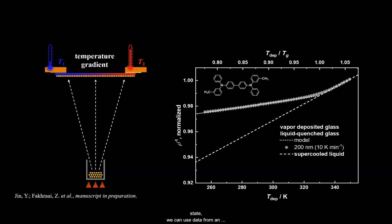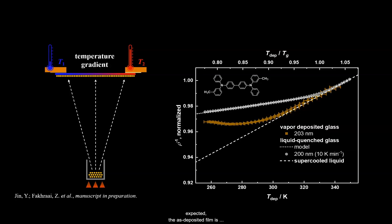Because this is a well-defined state, we can use data from an accurate model to replace the actual experimental data. We shall first look at the case of a thick film of slightly over 200 nanometers thick. As expected, the as-deposited film is denser than liquid quenched glass, less dense than supercooled liquid, and shows the largest density change around 0.85 TG.